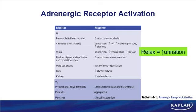Alpha-2 receptors are found in a limited number of locations. The most important is presynaptic nerve terminals, where alpha-2 acts as a negative feedback receptor — stimulating it inhibits the release of norepinephrine. Alpha-2s are also found on platelets, where stimulating them causes platelet aggregation, and on beta cells of the pancreas — the predominant adrenergic receptor there — where stimulating alpha-2s decreases insulin secretion.